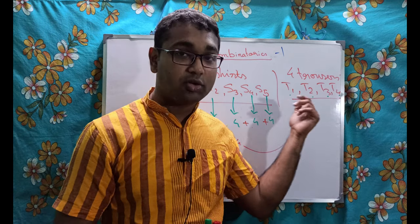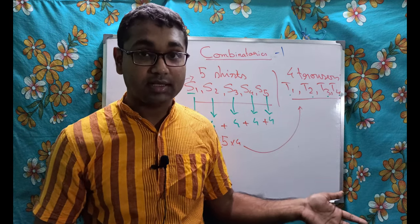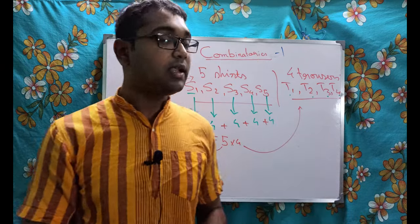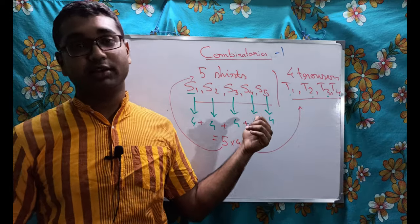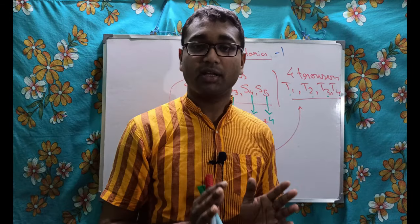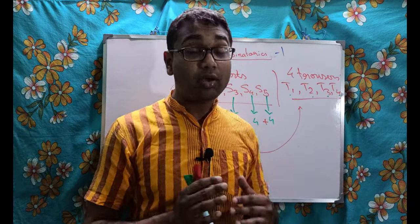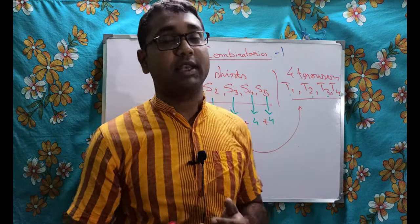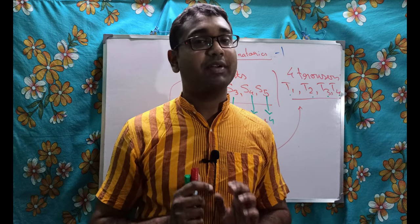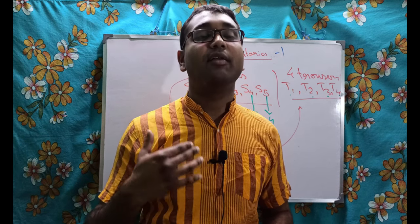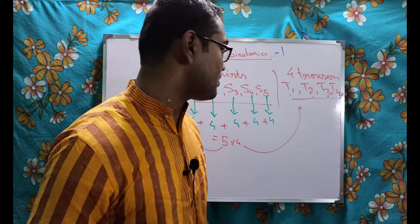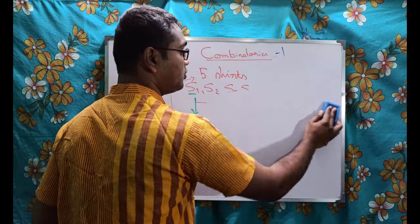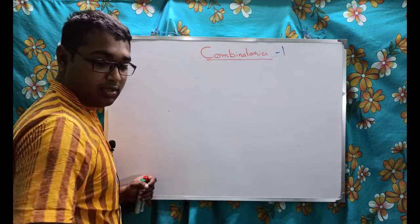In the Product Rule, two events are happening simultaneously. An event is something like: choosing a shirt is one event, choosing a trouser is another event, choosing a combination of them is also an event. I'll give a few more examples — please refer to the notes I've provided.